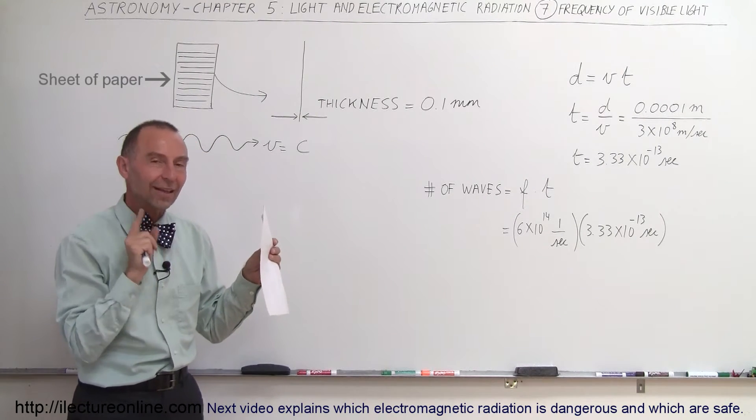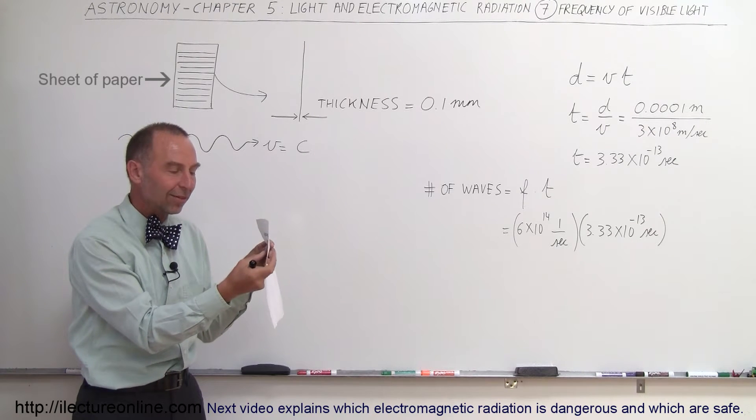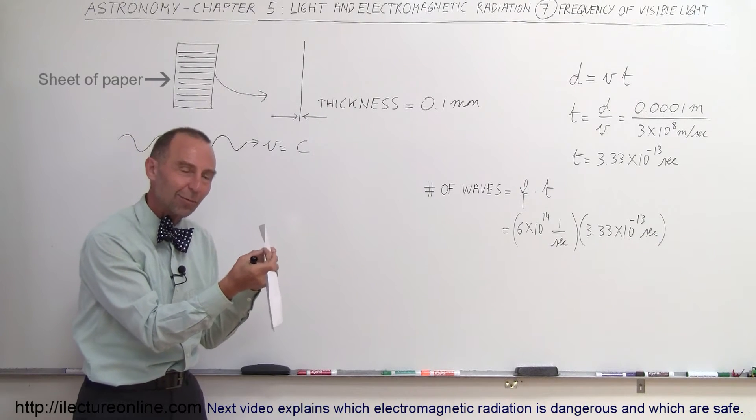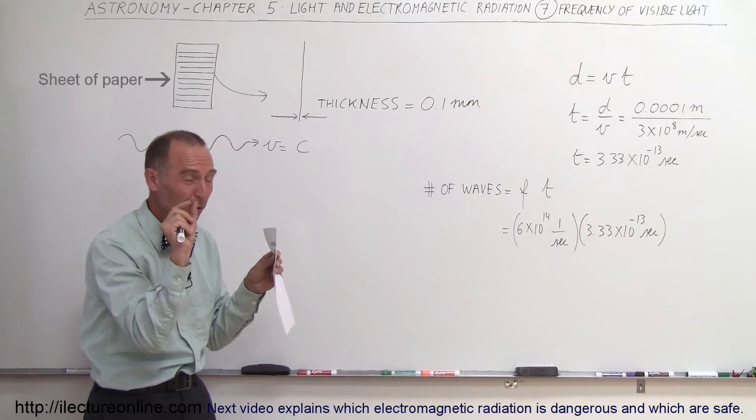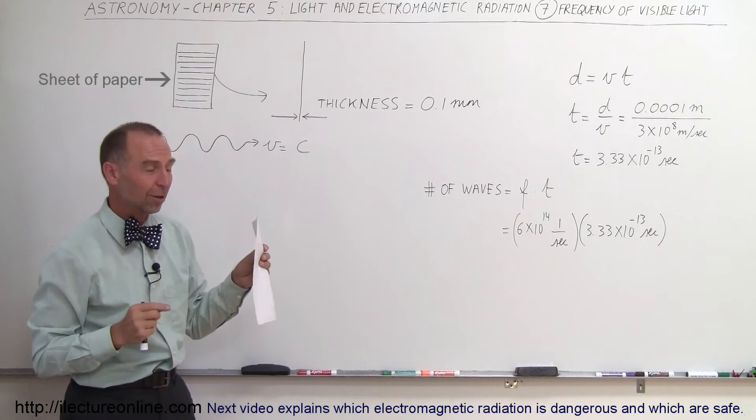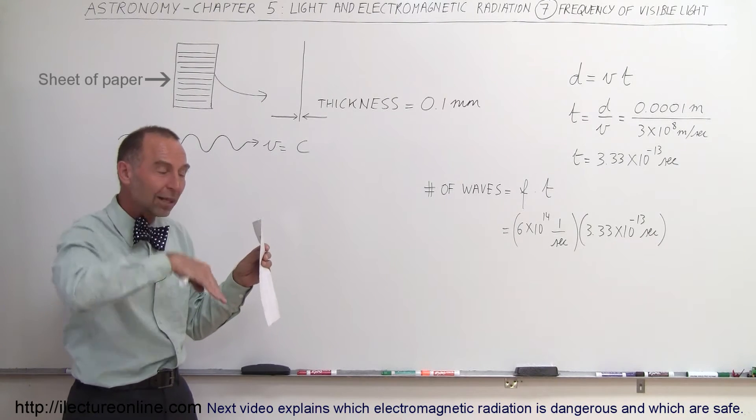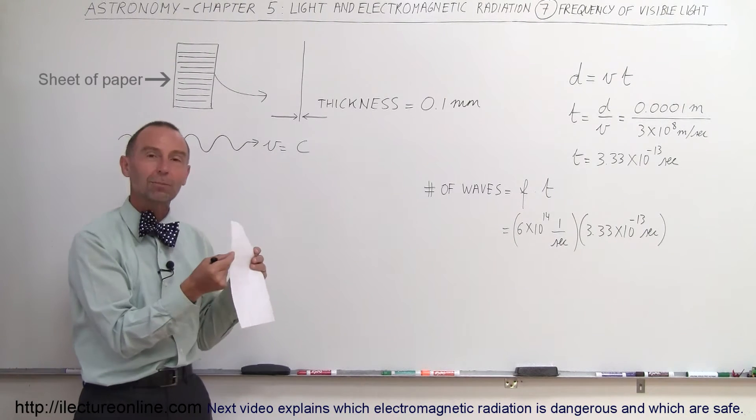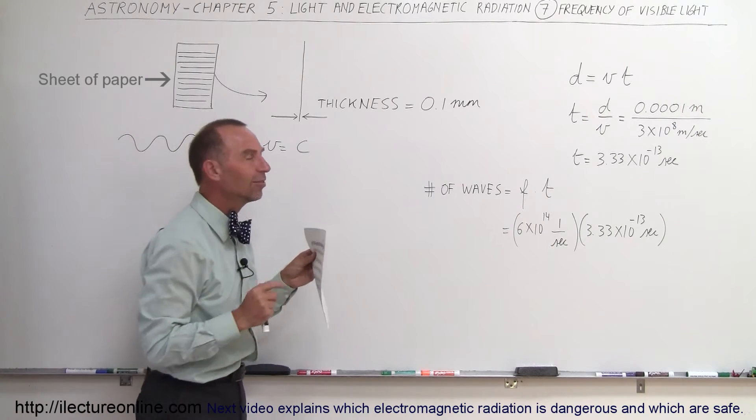The question is, in the time that it takes to travel from one side to the other side of this little thickness of the piece of paper which is 0.1 millimeters thick - imagine how small a time that would be at 186,000 miles per second - how many times would light vibrate up and down during that period of time? Wow. Well, let's see here.